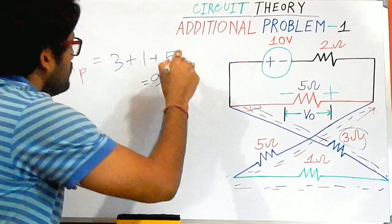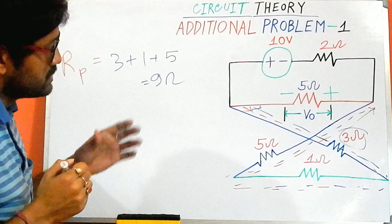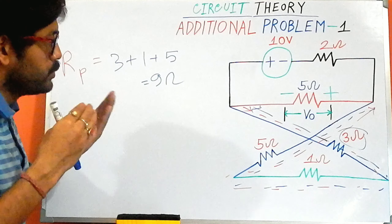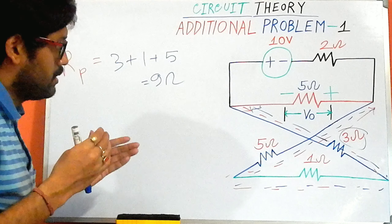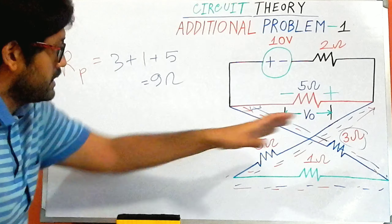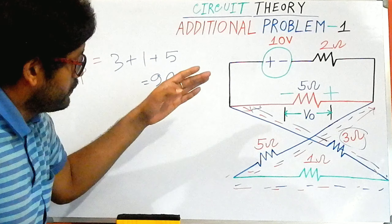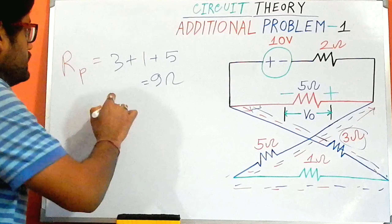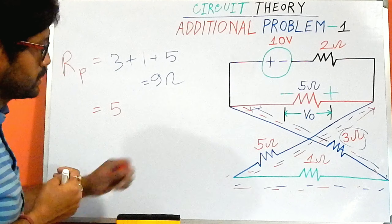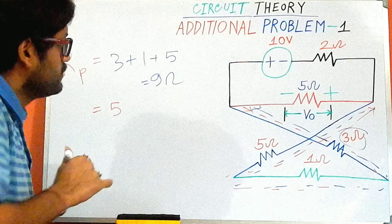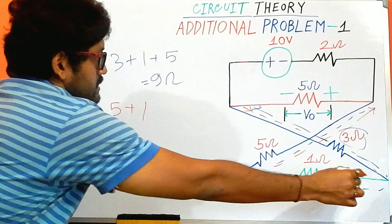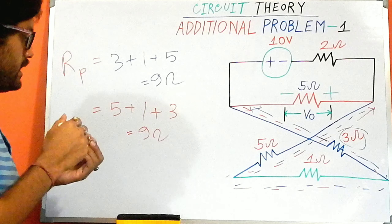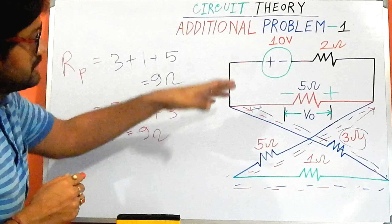The total resistance along the red path is 9 ohm. If I follow the opposite path — the blue line — you will get the same value of resistance. For that path: 5, then 1, then 3 — the same resistance of 9 ohm.